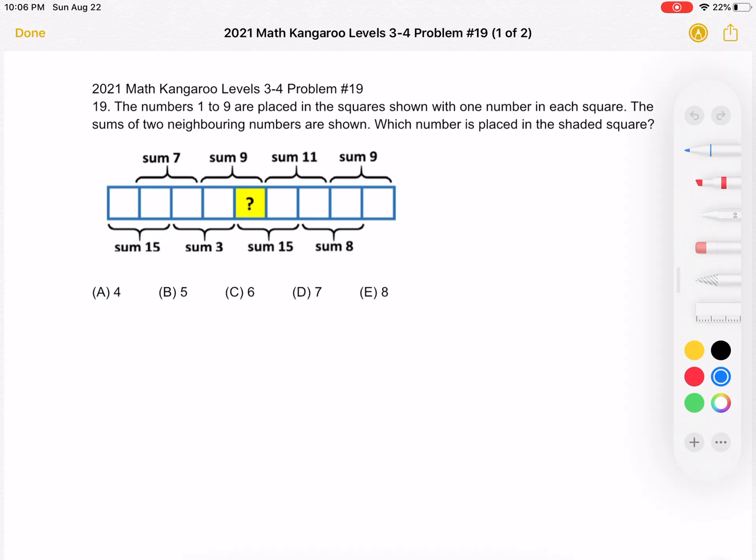Which number is placed in the shaded square? A, 4. B, 5. C, 6. D, 7. Or E, 8.